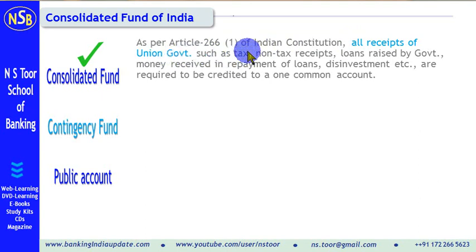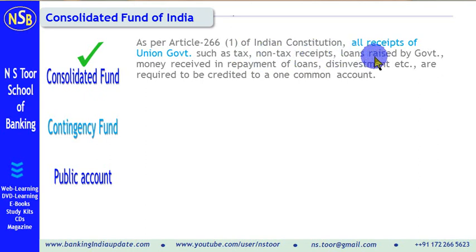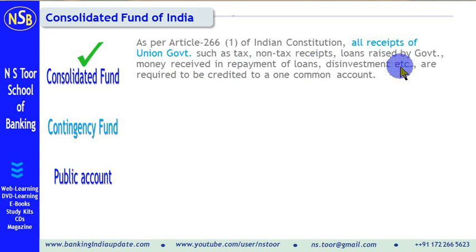These receipts can be tax receipts. Tax receipts may be direct tax receipts like income tax, personal tax, corporate tax, or indirect tax like excise duty, custom duty, service tax, goods and services tax. There are also non-tax receipts like interest on loans, loans taken by government, repayment of loans given by government, or disinvestment.